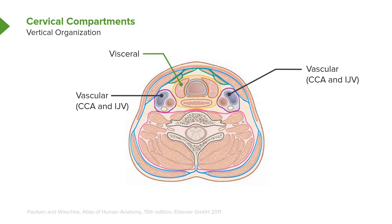Next, we have two vascular compartments. These are oriented more laterally — one on the left side of the image and one on the right. Each vascular compartment contains a pair of vascular structures. The laterally oriented one is the internal jugular vein, and the one situated more medially is the common carotid artery. That same relationship exists on the left side of the image.